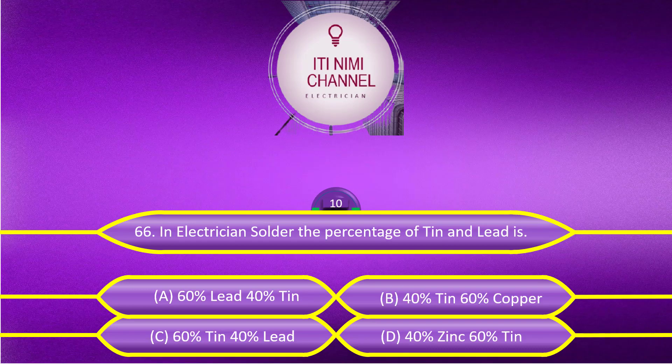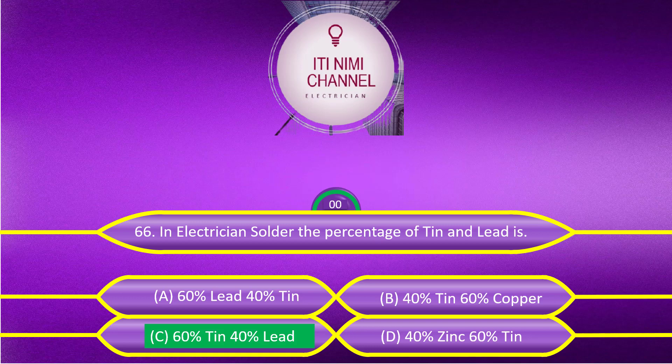In electrician solder, the percentage of tin and lead is: Option A, 60% lead, 40% tin; Option B, 40% tin, 60% copper; Option C, 60% tin, 40% lead; Option D, 40% zinc, 60% tin. The answer is Option C, 60% tin, 40% lead.